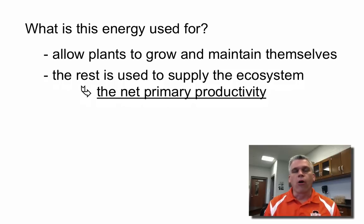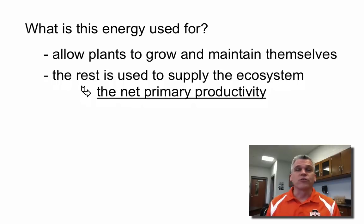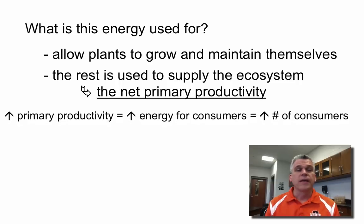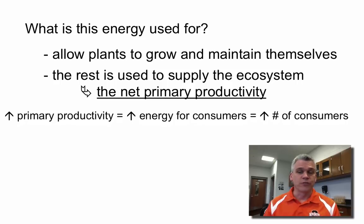The more autotrophs you have, the more energy that can enter into the ecosystem. That also means there's going to be more energy available for all the other consumers in that ecosystem. With a higher primary productivity, there's going to be more energy available for consumers, and hence more consumers.